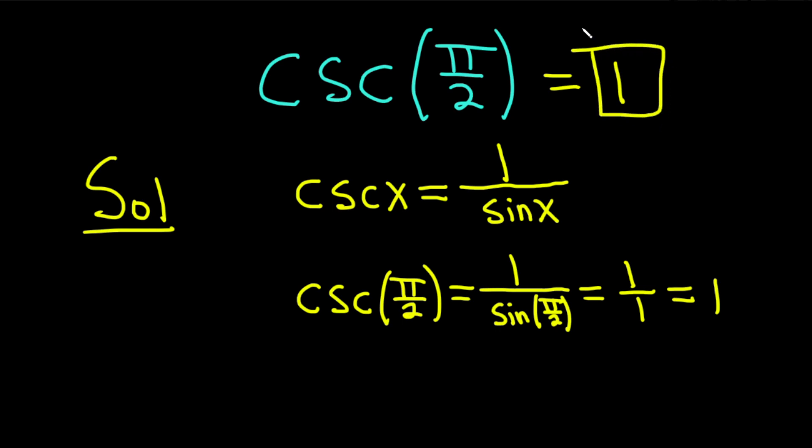The cosecant of pi over 2 is equal to 1. Hopefully this video has been helpful to someone out there in the world who's trying to learn math. Good luck!